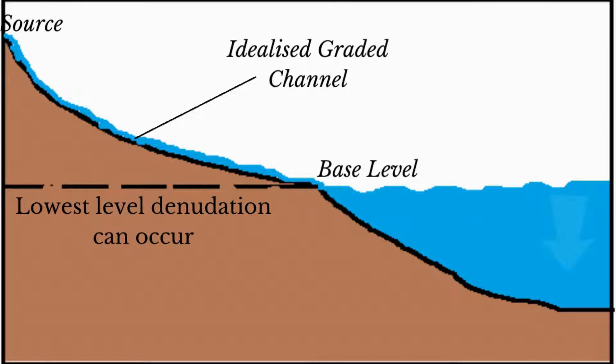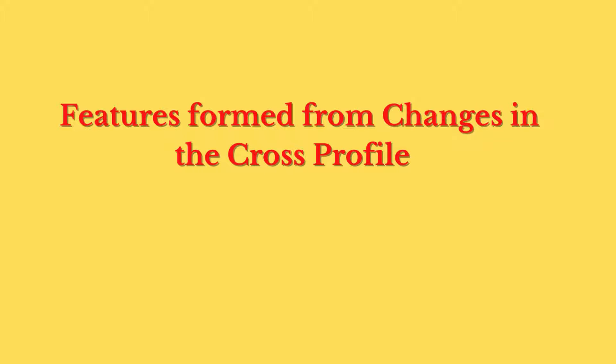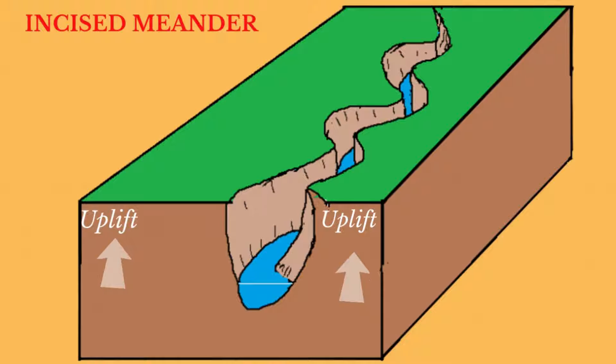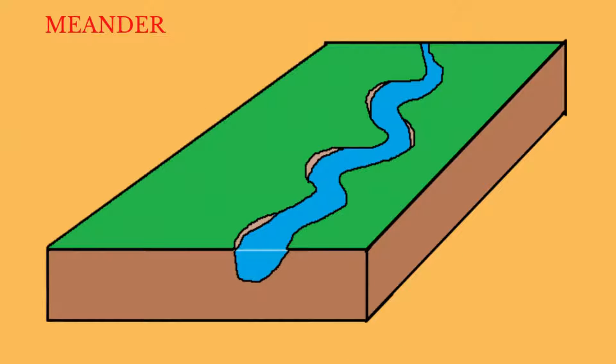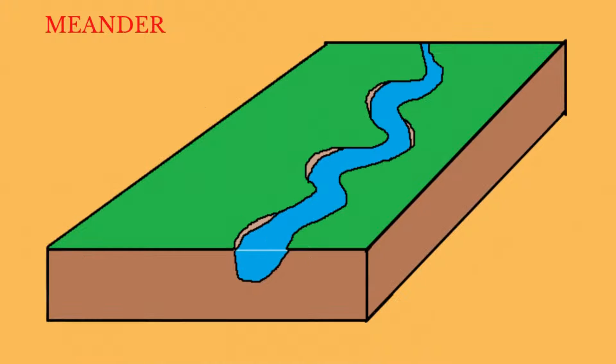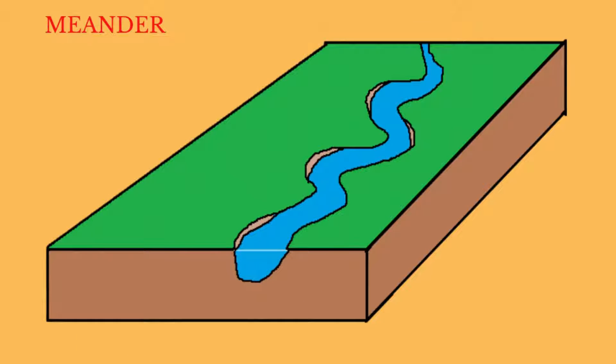The nick point retreats upstream over time. Not only do features manifest themselves in the long profile of the river, they also manifest in the cross profile as well. One such feature is an incised meander. Meanders are sweeping bends in the rivers. They are usually found along the middle and lower courses of a river, where lateral erosion is greater than vertical erosion.